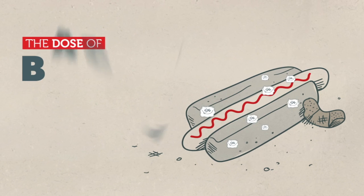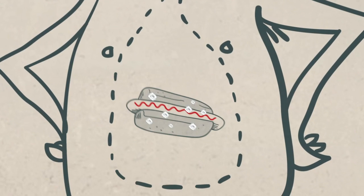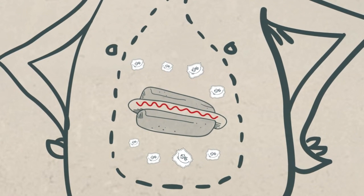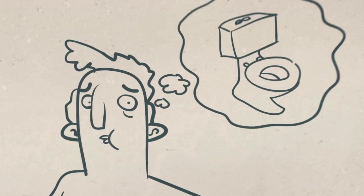The dose of bacteria is important. In food poisoning, you get sick because you are ingesting large numbers of bacteria or large quantities of toxin in your food.